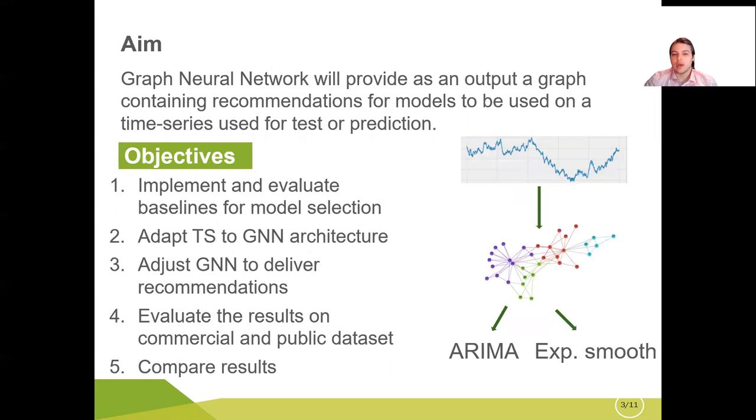The overall aim is to construct graph neural network model which should recommend a model based on time series data as an input. So basically given new time series data, we construct a graph and then we see which model is best for its associated time series.